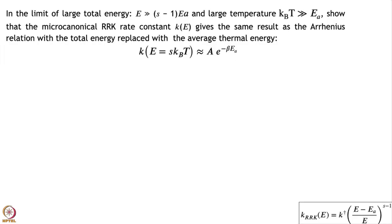The next question is more mathematical. We have looked at the RRK rate at constant energy — the micro-canonical RRK rate. How is that rate related to the Arrhenius rate? There has to be some relation, specifically when the energy is large: when E is much greater than (s−1)·Ea, and Ea is also much greater than kT. Can you work out a relation between this RRK rate and the Arrhenius rate, and identify what A comes out to be?